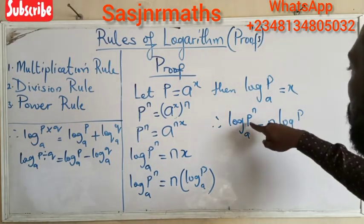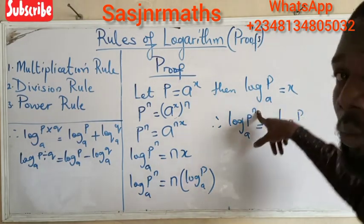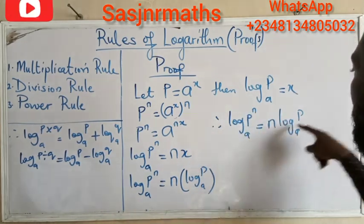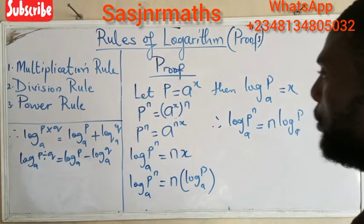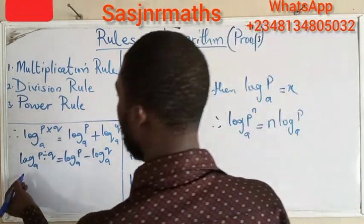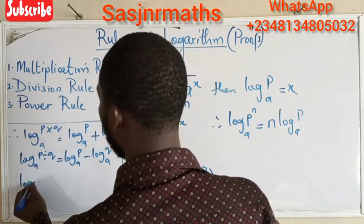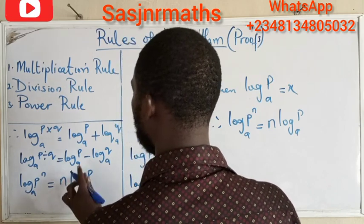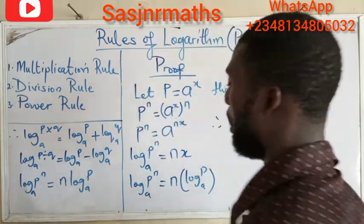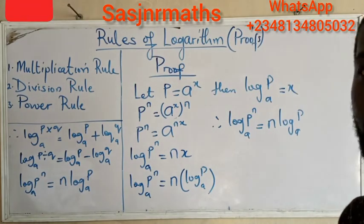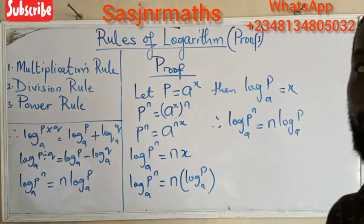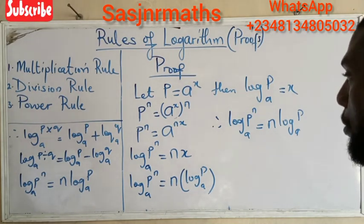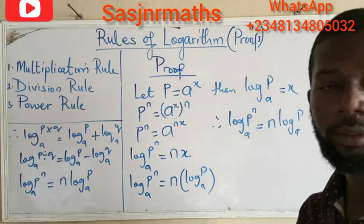If you have a logarithm raised to a power, it is as simple as taking that power to the front of the log. So the third rule — the power rule — tells us that log base a of (p raised to power n) equals n log base a of p. I believe we understand this, and I will implore everyone to please subscribe to my YouTube channel. Thank you, God bless, and till next time we meet.